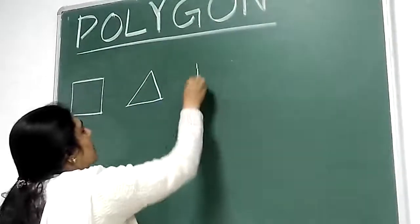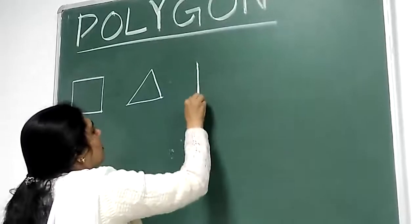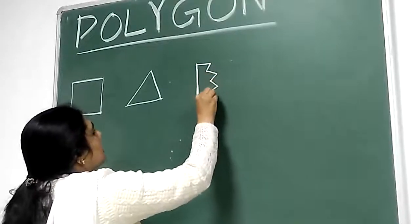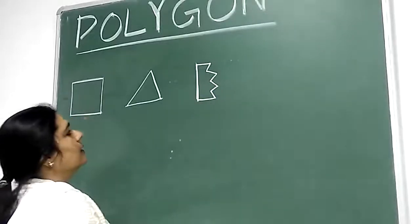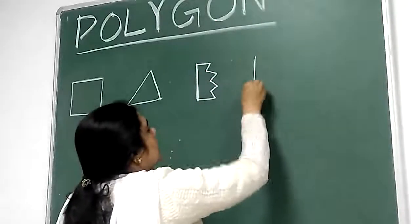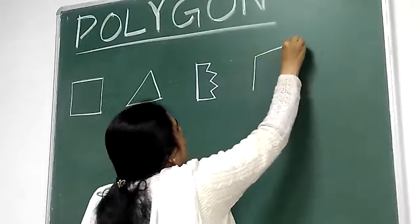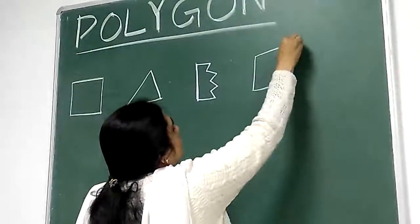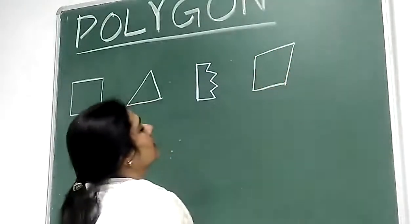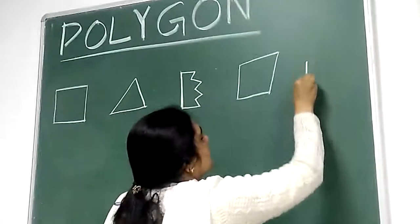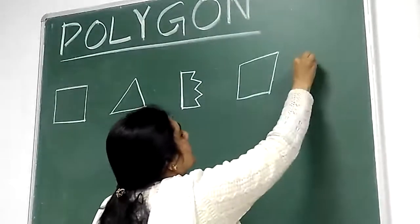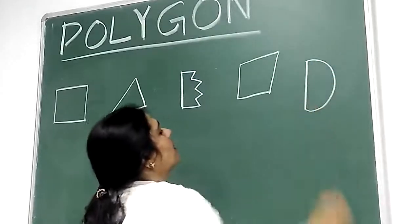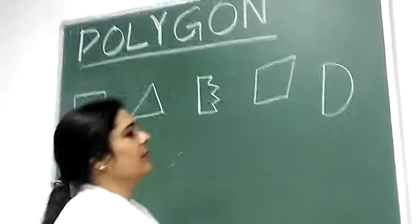This is made by many line segments. Now, this figure is made up of four line segments. This figure is one line segment and it is made by a curved line.